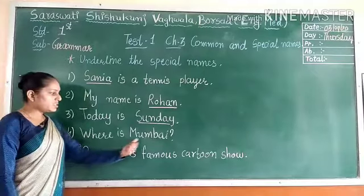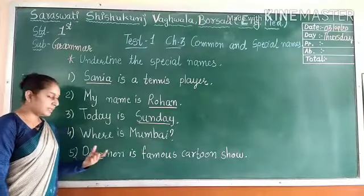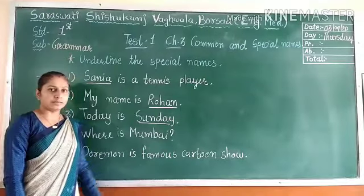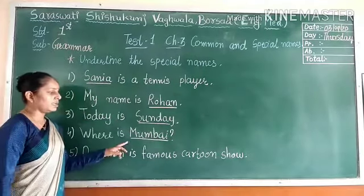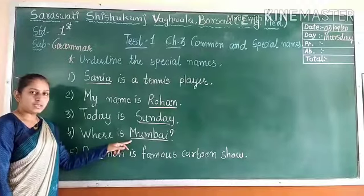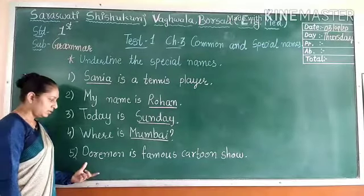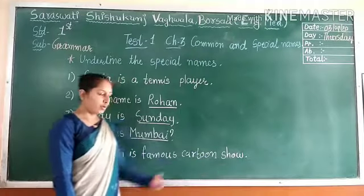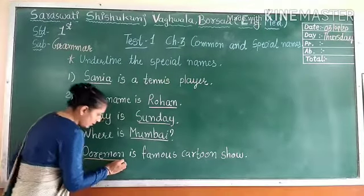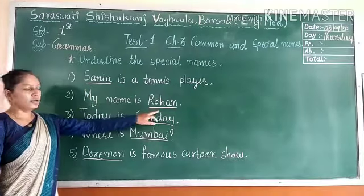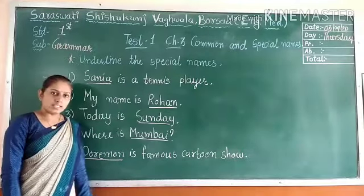Fourth: Where is Mumbai? Which word starts with a capital letter? Mumbai. So underline this word — Mumbai is the special name of a city. Fifth: Doremon is a famous cartoon. The name of the cartoon is Doremon, so the special name is Doremon. So the special names are: Sanya, Rohan, Sunday, Mumbai, and Doremon.